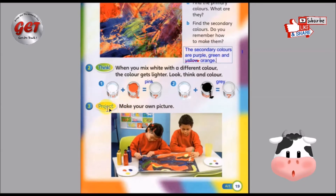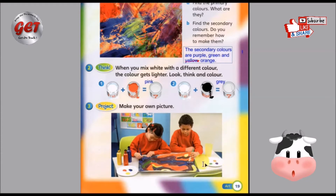Part 3 — Project. Make your own picture. 这边呢有一个活动给小朋友们。你们要自己画画，然后呢你们可以用这个颜色。我们可以用三种颜色弄出另外三种颜色，这样子的话呢我们一共会有六种颜色。We have six different colors all together. The primary colors are red, blue and yellow.